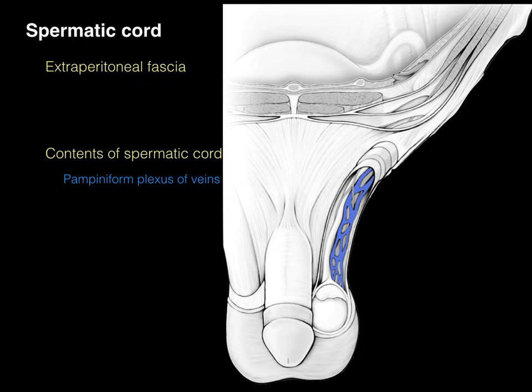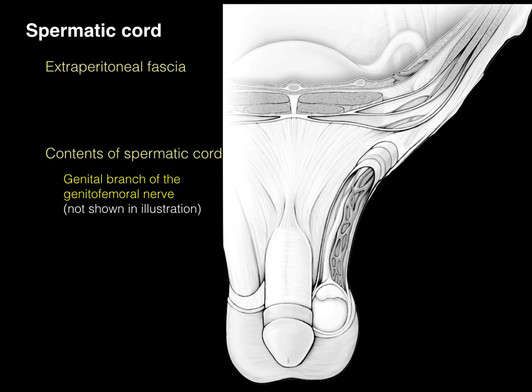The ilioinguinal nerve runs between the transversus abdominis and internal oblique, goes through the inguinal canal and into the spermatic cord. Note that it does not enter the deep inguinal ring, but it does enter the inguinal canal and exits the superficial inguinal ring. The genital branch of the genitofemoral nerve enters the deep inguinal ring, passes through the inguinal canal, exits the superficial inguinal ring, and provides sensory innervation to the spermatic cord.